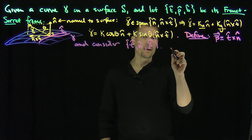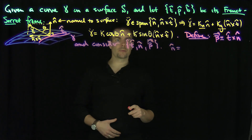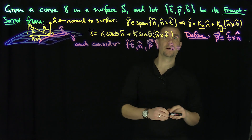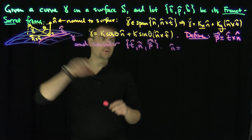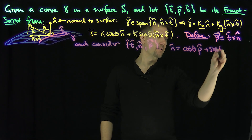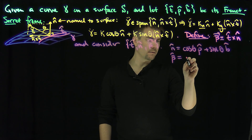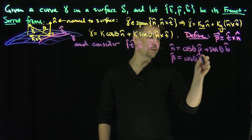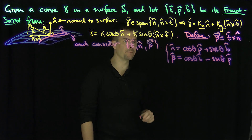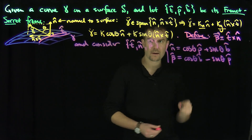Let's figure out the differentials. We can write n-hat in terms of t, b, and p. n-hat relative to p is cosine(theta), so n-hat equals cosine(theta) p-hat plus sine(theta) b-hat. This forces beta-hat, by orthogonality, to be cosine(theta) b-hat minus sine(theta) p-hat. So we can write n-hat and beta-hat in terms of p-hat and b-hat, since those vectors lie perpendicular to t.